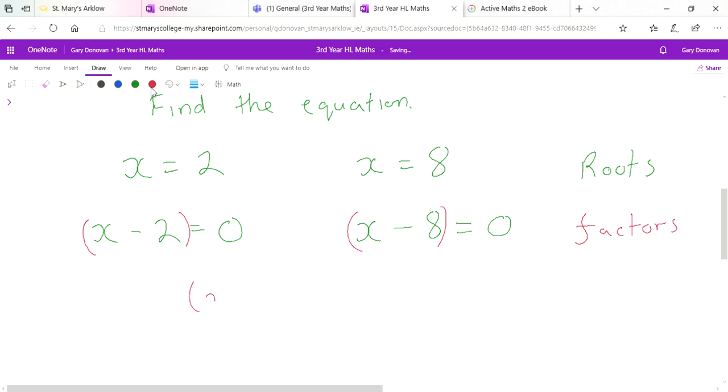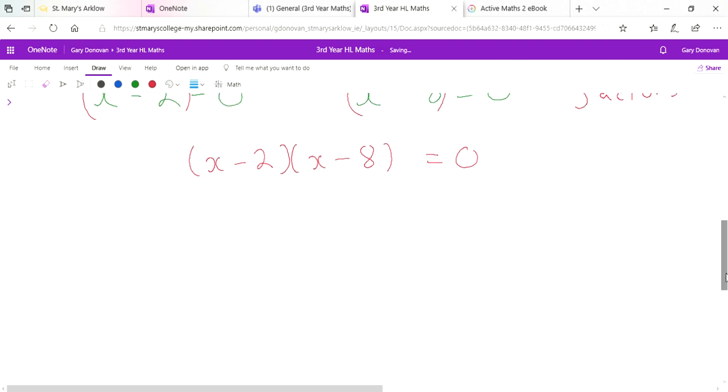So to get our actual equation, we get our two factors x minus 2 and x minus 8 equal to 0, and we multiply it out. So now it's just a matter of doing something that you've learned and seen hundreds of times at this stage.